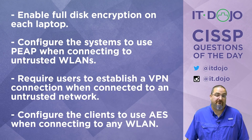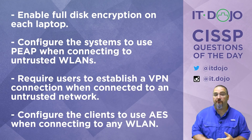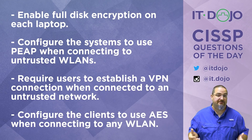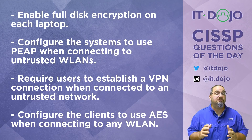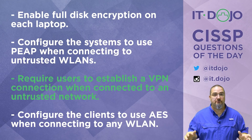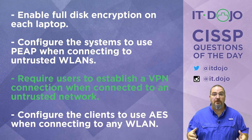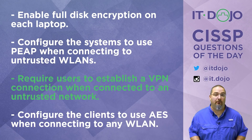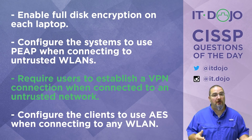Answer choice number three says to require users to establish a VPN connection when connected to an untrusted network. This is totally what you would do — in fact, this is a great idea just for general life, whether from an enterprise perspective or a personal perspective. This is good solid security practice. Whether you connect to my office network, a coffee shop, or your buddy's house, your level of trust in those networks should be about the same.